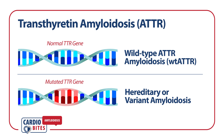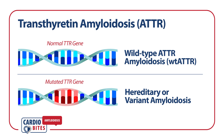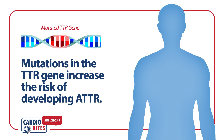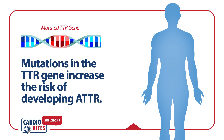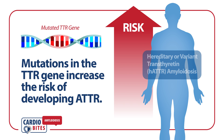Transthyretin amyloidosis, or ATTR, may be classified as either wild type or hereditary ATTR amyloidosis, determined by whether or not the TTR gene has a mutation. Wild type ATTR amyloidosis is a type of ATTR where the genotype is normal, or there is no mutation in the TTR gene. Mutations in the TTR gene that destabilize the TTR protein make carriers of these pathogenic TTR alleles at a greater lifelong risk of developing ATTR. Specifically, these individuals get hereditary ATTR amyloidosis, or what we also call variant ATTR amyloidosis.